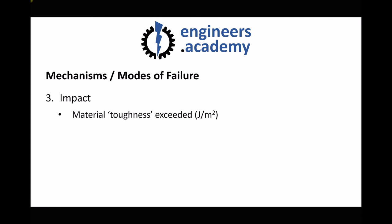Next we have impact failure. We know from previous work that impact relates to the toughness of the material, measured in joules per metre squared or energy per unit area. A big difficulty with impact is that it's often unpredictable — forces can change, velocity of impacting objects can change, cross-sectional area of impacting objects can change, and parameters such as impact time and direction of impact would all affect whether a component fails due to impact. So it's a very difficult area to analyse and understand.